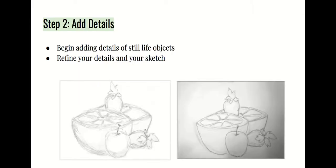Number two: begin to add details. Add details of your still life objects and refine your sketch to make it look how you want. As you can see, I added details on the strawberry, apple, and grapefruit — think about those quick details and refine them.